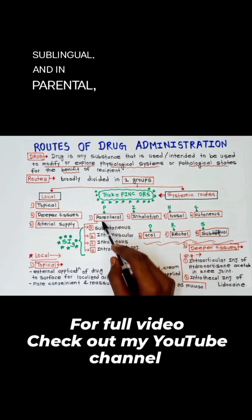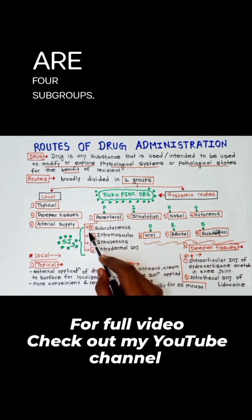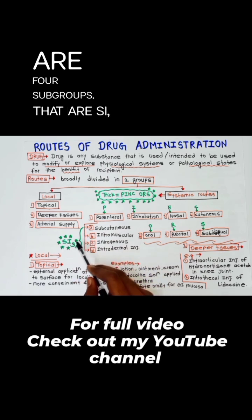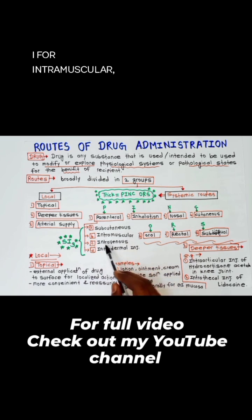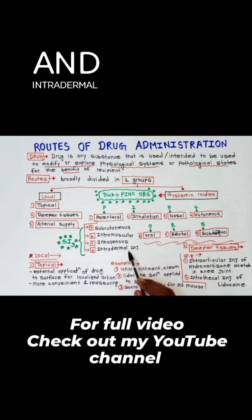And in parenteral, there are four subgroups that are SI3: S for subcutaneous, first I for intramuscular, intravenous, and intradermal injection.